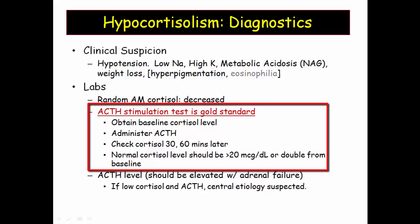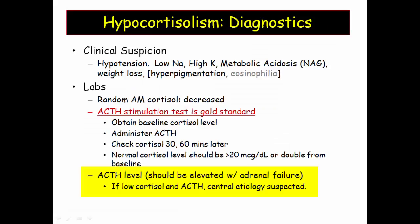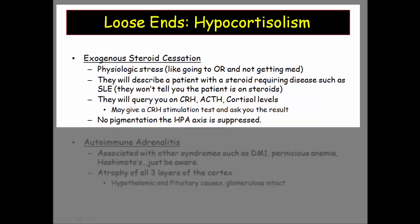In clinical reality, the gold standard is the ACTH stimulation test. You obtain a cortisol level at time zero, followed by an ACTH bolus. The cortisol level should subsequently double. Once the diagnosis of hypocortisolism is established, you still need to sort out the cause. An ACTH level can be obtained to determine primary adrenal failure versus a central disorder.